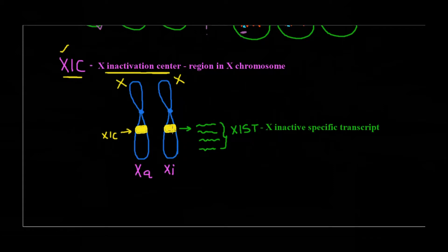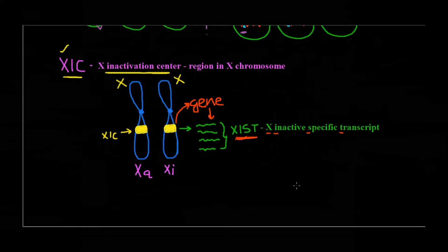The X Inactivation Center has a gene that codes for a specific transcript or RNA called XIST — X Inactive Specific Transcript. The name itself suggests it has something to do with inactivation; it plays a role in inactivating the chromosome. So the XIC region of both X chromosomes contains a gene that codes for this transcript called XIST. Importantly, only the X chromosome that is undergoing inactivation will produce XIST, because XIST is the RNA that is going to inactivate the X chromosome.